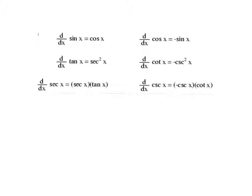Let me remind you what the trig derivatives are. Hopefully you have sine and cosine down by now — those are our two common ones. We do have to know all of these, and the more we practice, the more you'll get them down. Anybody that starts with a C, its derivative is negative; everybody else should have a positive derivative. I would learn them in pairs: derivative of sine is cosine, cosine is negative sine — get that pair down, then the next pairs.